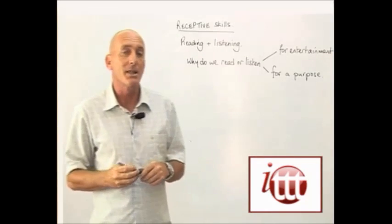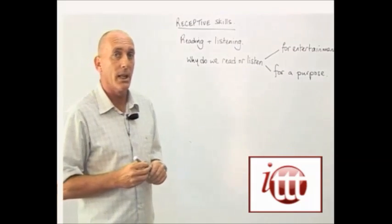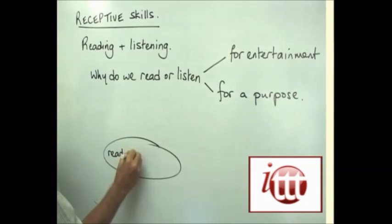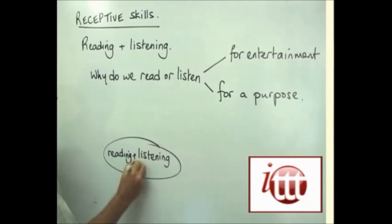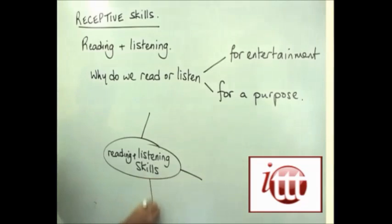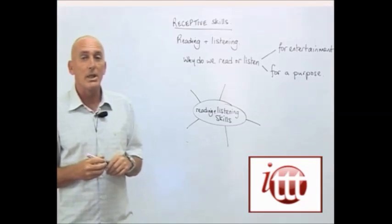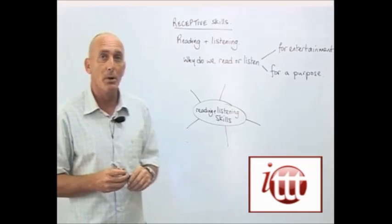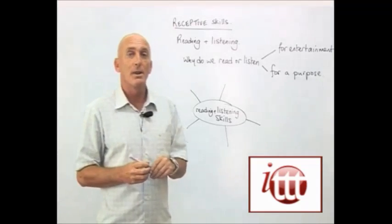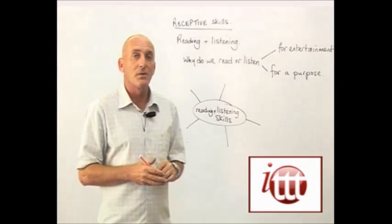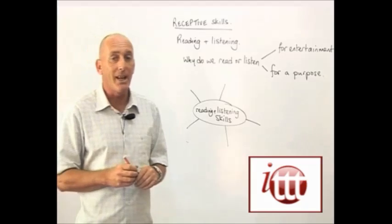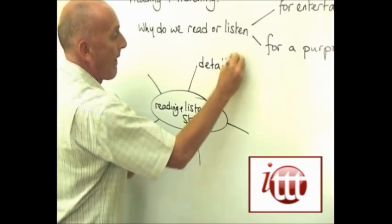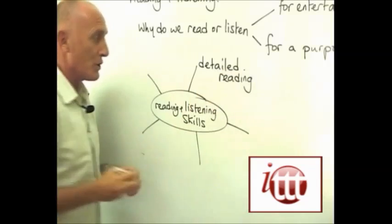Within the reading and listening areas, there are a number of sub-skills that we can teach our students. For example, say we had just bought ourselves a new video camera and along with that came a whole book of instructions. In order to find out how to get that camera working, we would need to very carefully read each page of that brochure, and that would be what is called detailed reading.